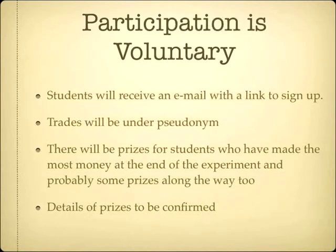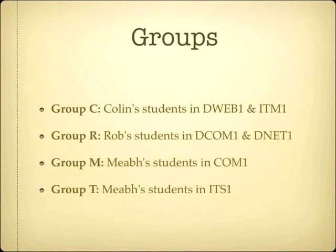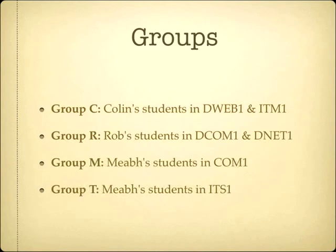It's just computing first years, about 100-odd of you, so the probability of winning a prize isn't ridiculously long. There are four groups: Group C is my D-Web and ITM group; Group R is Rob's D-Com and D-Net; Group M is Maeve's Com1 group — and you're Group M. So you'd probably be most interested in betting on Group M.